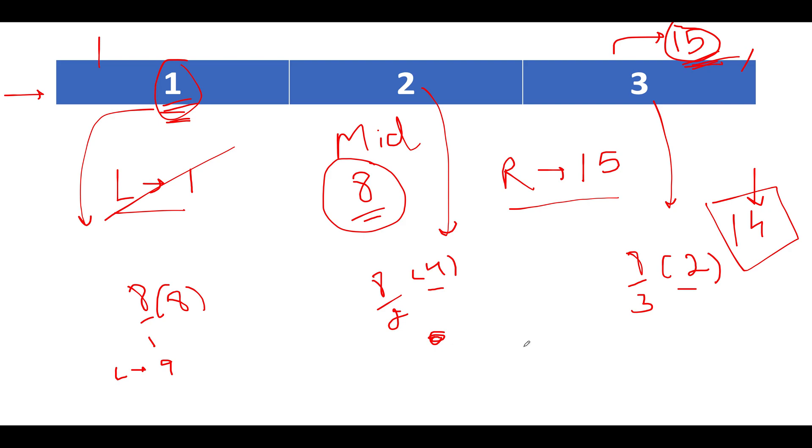And right set to 15. Let me just change the color of pen for better understanding. Let's again calculate the middle value. What is the middle value? 9 plus 15 is 24, 24 by 2 gives me 12. So 12.